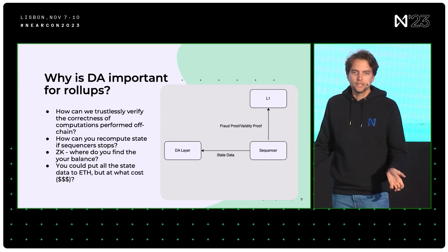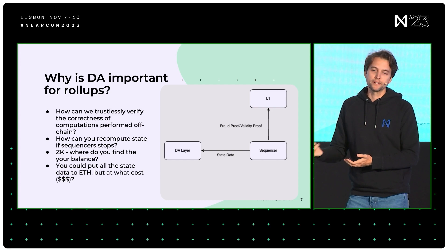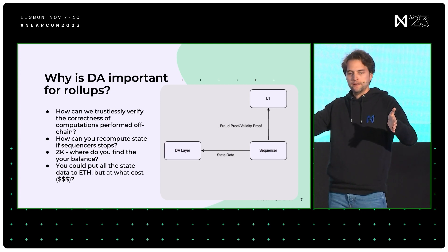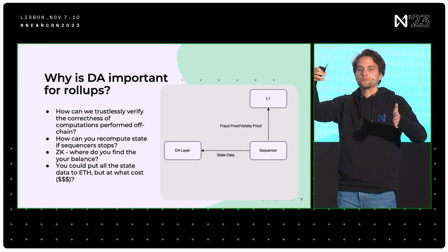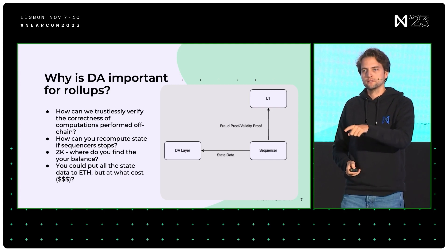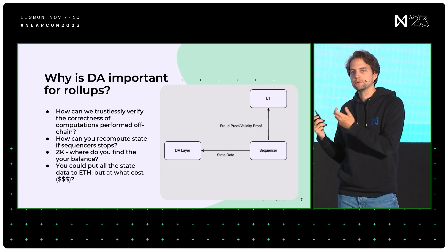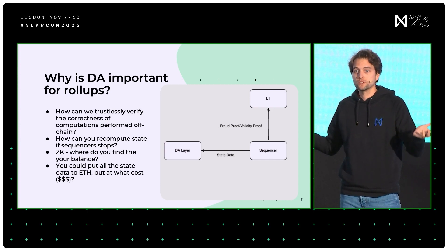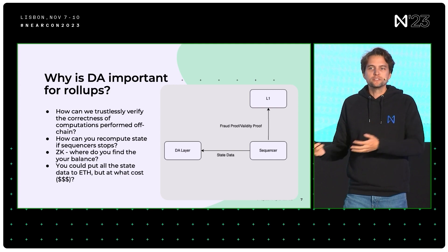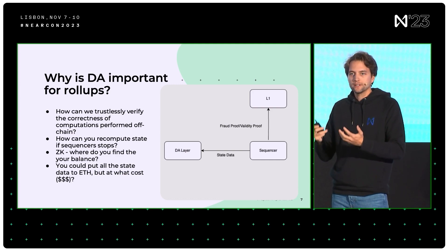How does that relate to data availability? You have to somehow trustlessly verify the correctness of computation performed off-chain. But how do you create the fraud proof in the first place? There's a state A and you want to go to state B — there's an execution between, done through transactions. You have to have access to those transactions to say there's a problem with these state changes. That data has to live somewhere — it can't live with the party doing execution, because what if they just don't respond? You want to be able to continue the chain and keep the state somewhere. For ZK, you don't need the transactions per se, but where do you check your balance? It has to live somewhere. That is where the data availability layer comes into play.